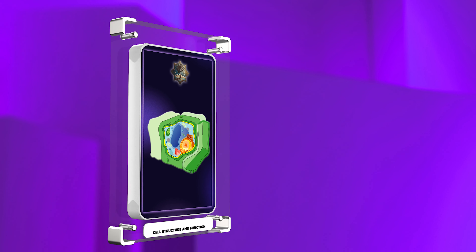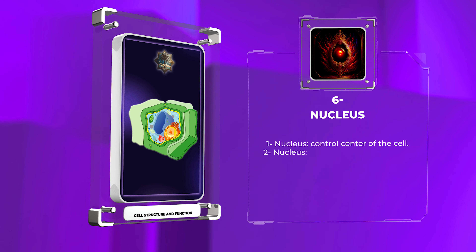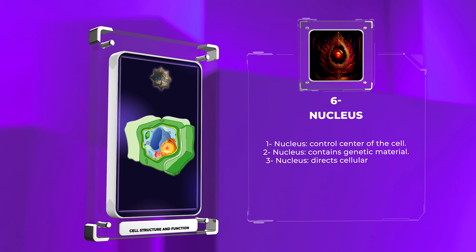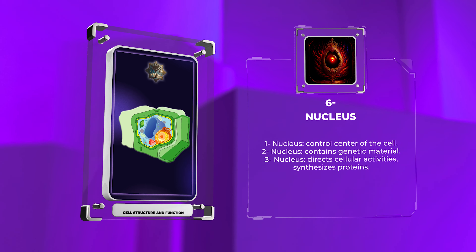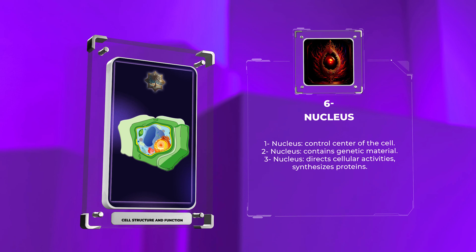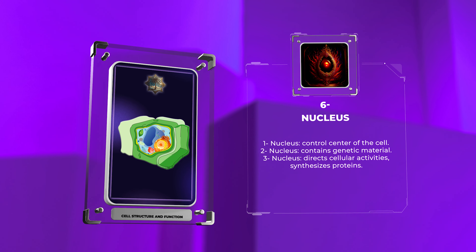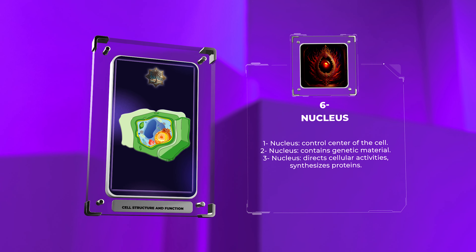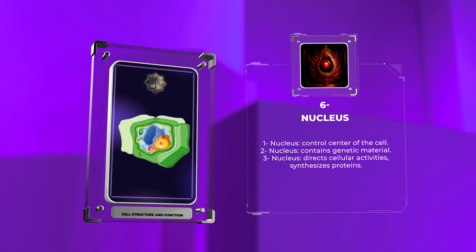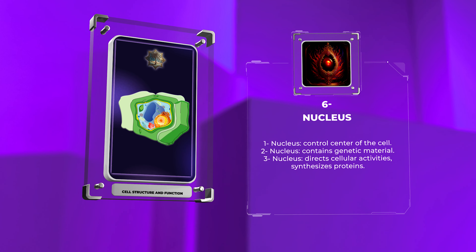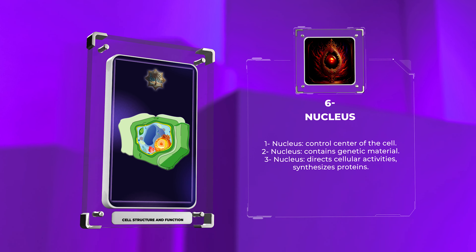As the control center of the cell, the nucleus contains genetic material in the form of DNA. It directs cellular activities by transmitting genetic information and orchestrating the synthesis of proteins. The nucleus is enveloped by a double membrane called the nuclear envelope, which contains nuclear pores allowing communication between the nucleus and the cytoplasm.